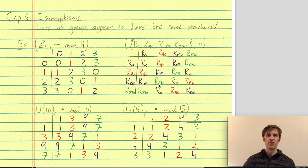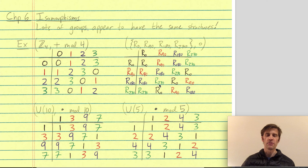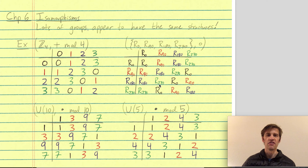Hello everyone. I'd like to review isomorphisms, which we discussed in class, but it's a chance to see them again in a quicker fashion now that we've moved the class online. The main idea of an isomorphism is that lots of groups appear to have the same structure, even though their elements have different names. Isomorphisms are the mathematical formalism that allows us to say that two groups have the same structure — we call that two groups being isomorphic.